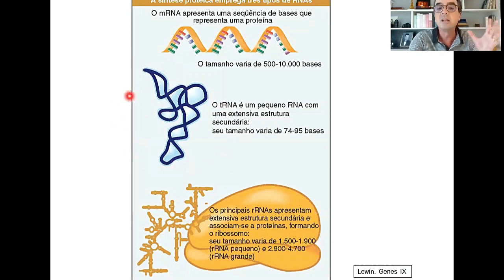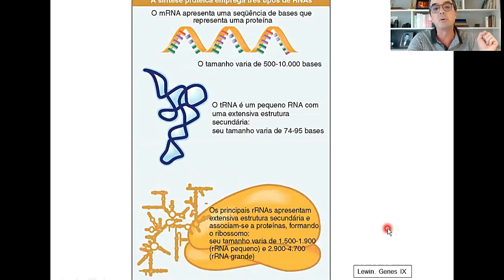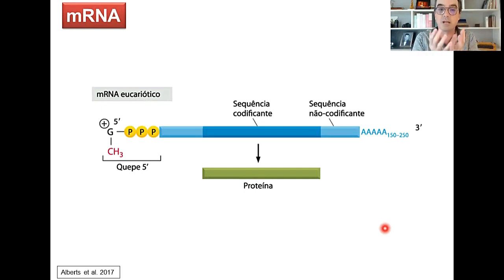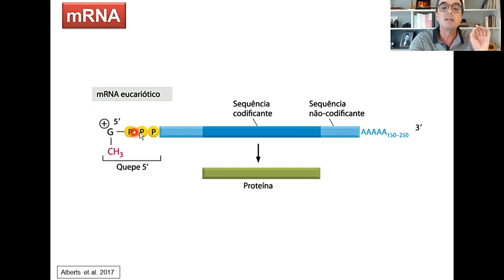O RNA transportador tem entre setenta e poucas e noventa e poucas bases nitrogenadas ou nucleotídeos em sua sequência. E finalmente temos uma terceira categoria muito importante, que é o RNA ribossomal ou ribossômico, que é o que entra na composição dessa grande fábrica de proteína que nós chamamos de ribossomos. Olhando com um pouquinho mais de detalhe, os RNAs mensageiros no caso dos eucariotos — que têm um núcleo organizado — têm algumas particularidades; nos procariotos é um pouquinho diferente.